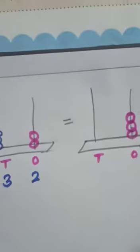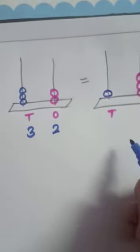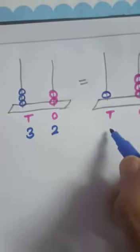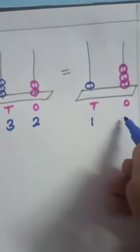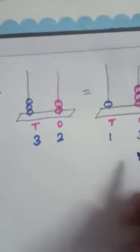So, how many we have left? Only 1. So, draw it here. What we have got? We have 1 on 10th place and 3 on 1st place. So, answer is 13.